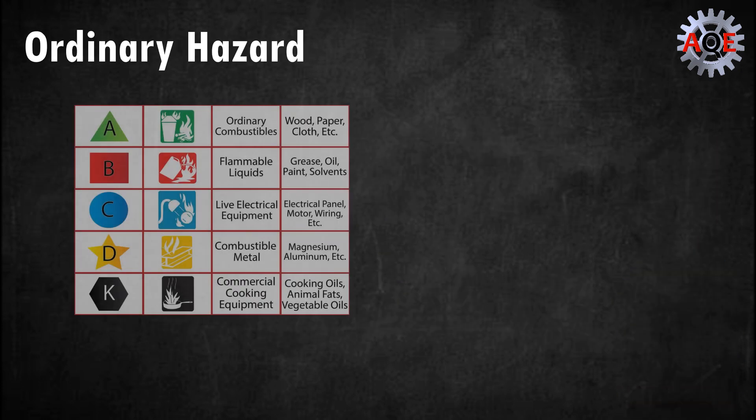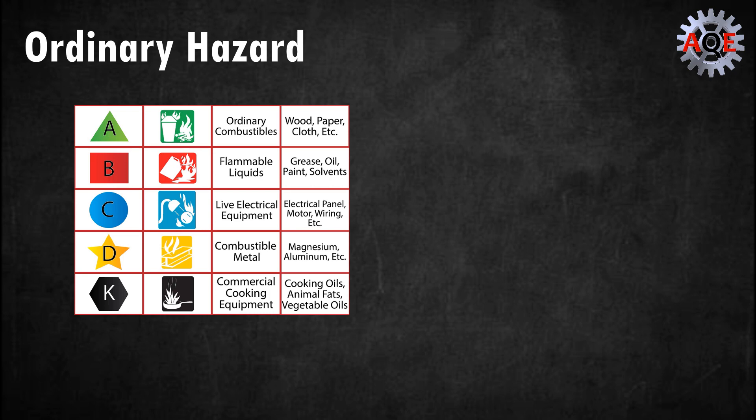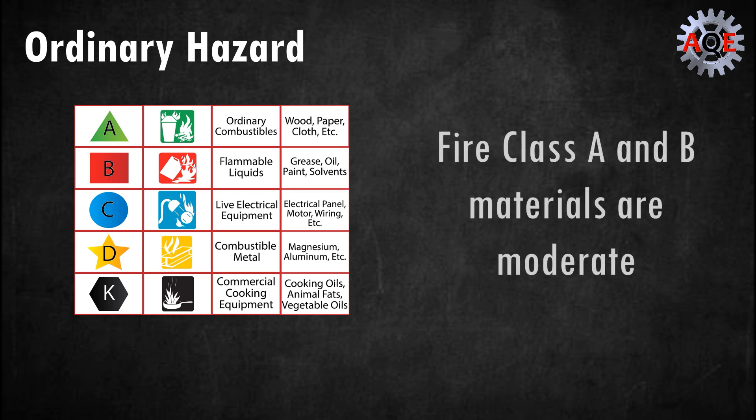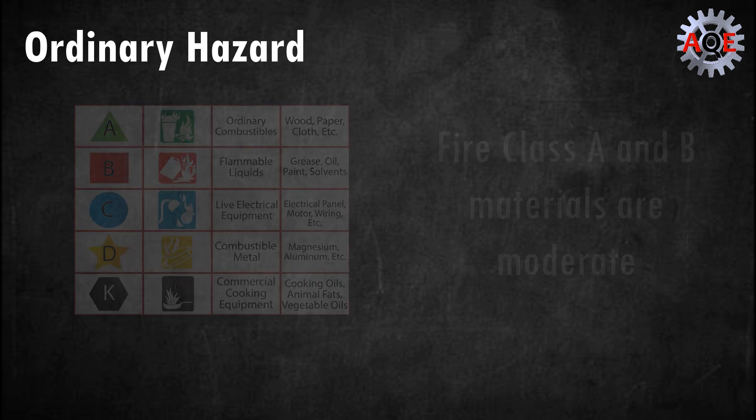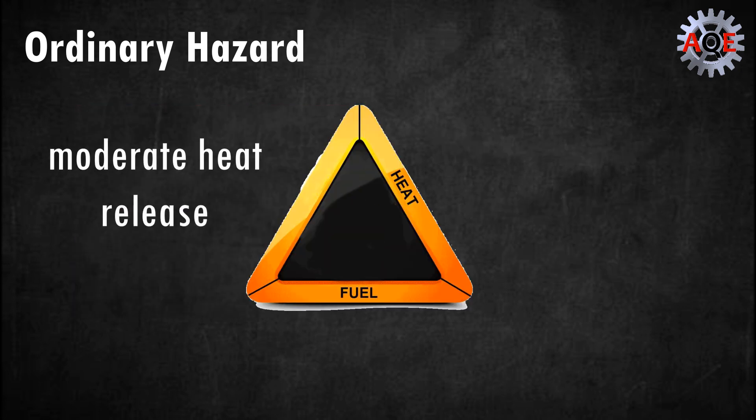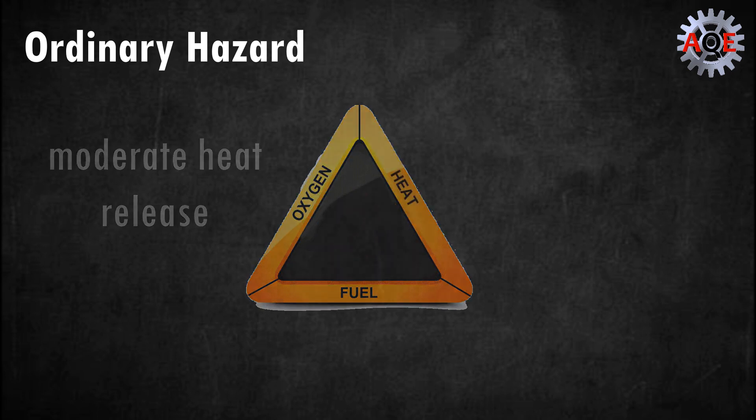Ordinary hazard. These hazard areas are environments where the combustibility and quantity of class B flammables and class A combustible materials are moderate. You can expect fires to grow with moderate heat release rates in these environments.